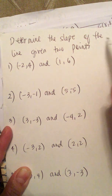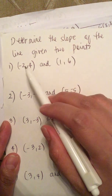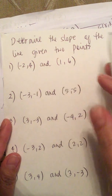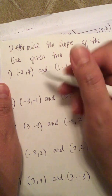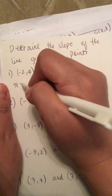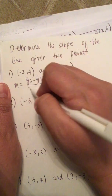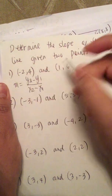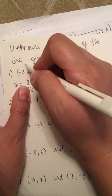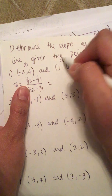Determine the slope of the line given two points. They give us (-2, 4) and (1, 6). The formula for slope is m equals y2 minus y1 over x2 minus x1. So let's label the first point as point 1 and the second as point 2.